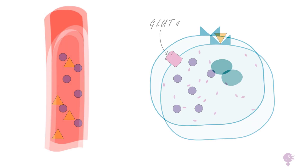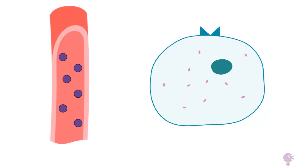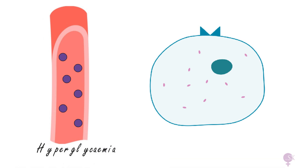In diabetes, insulin is either deficient or not used effectively. In this case, glucose remains in the bloodstream, resulting in persistent high blood sugar levels.